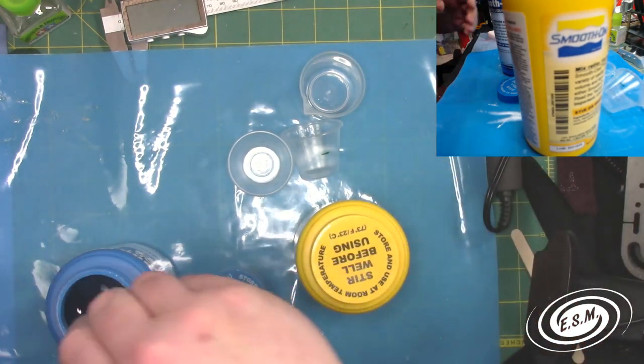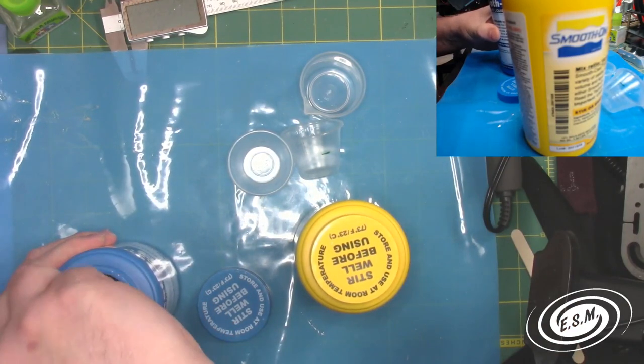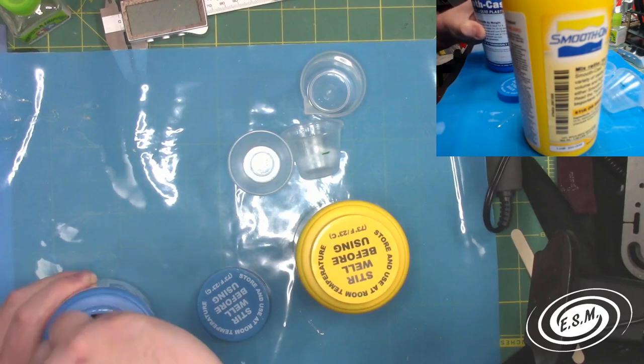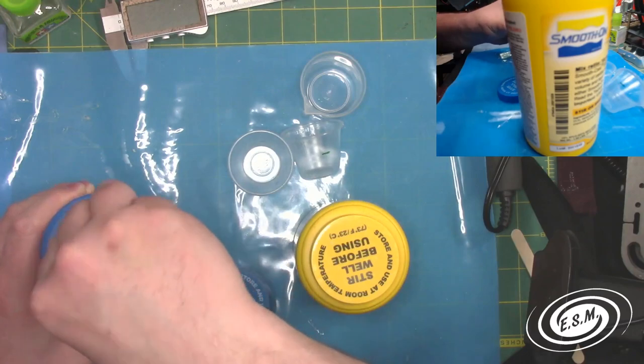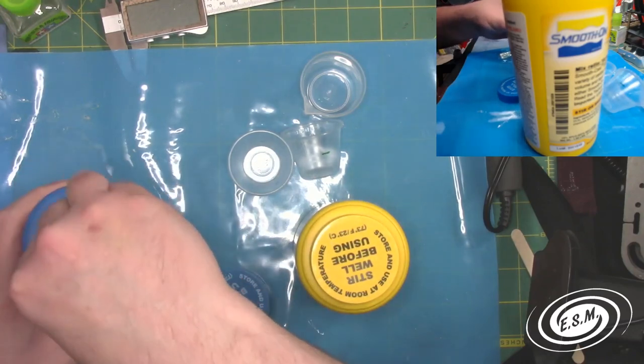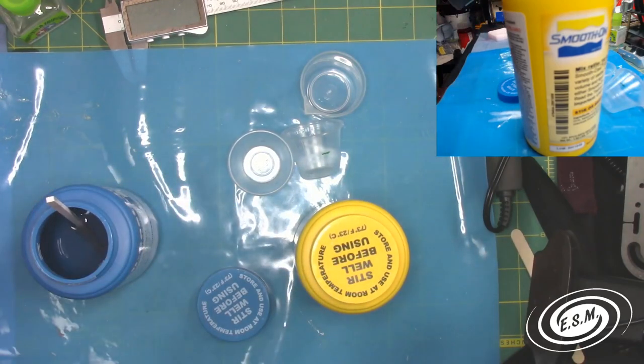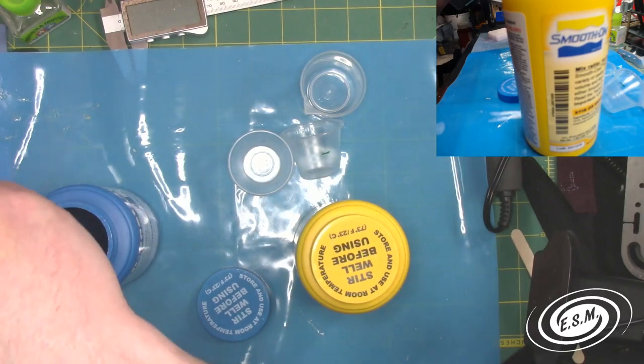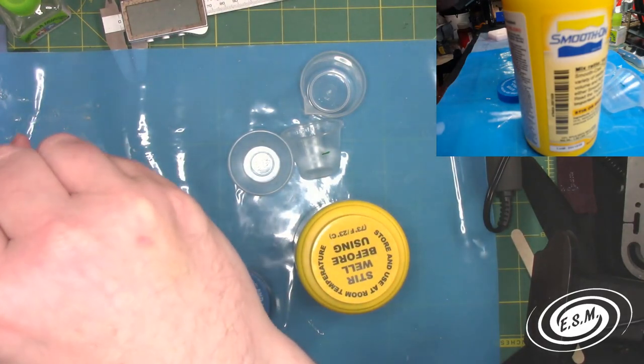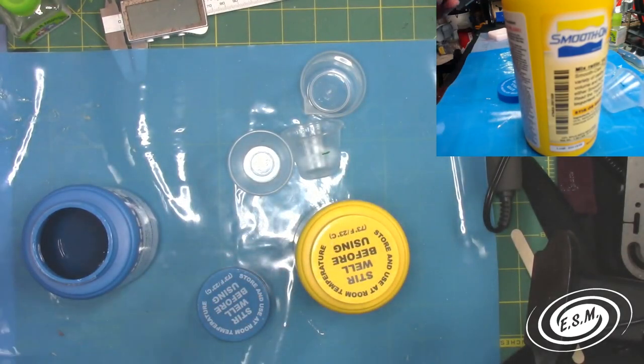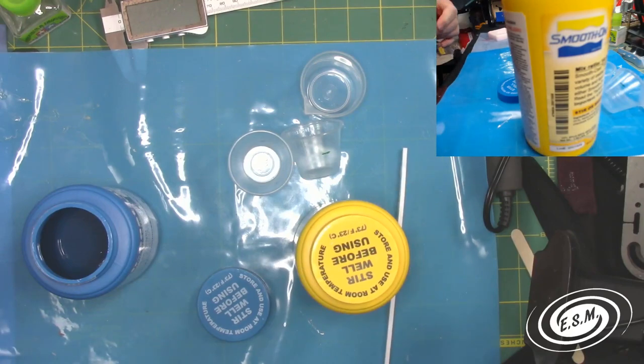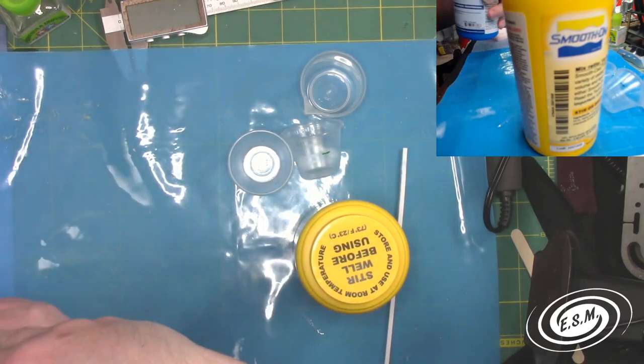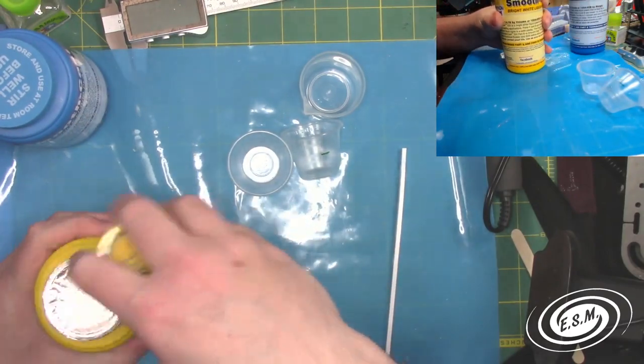I'll give this a stir. That is the B stirred. I'll put it back on there so no dust gets into it and then we'll get the A stirred and then we'll get ready to mix.